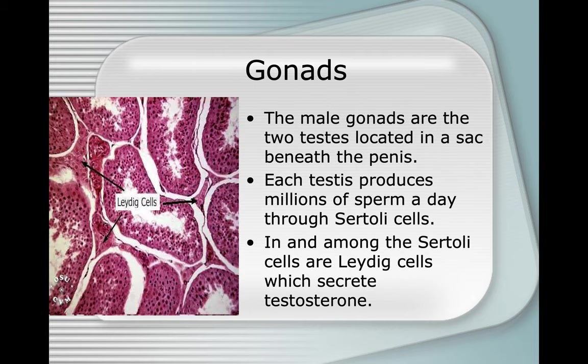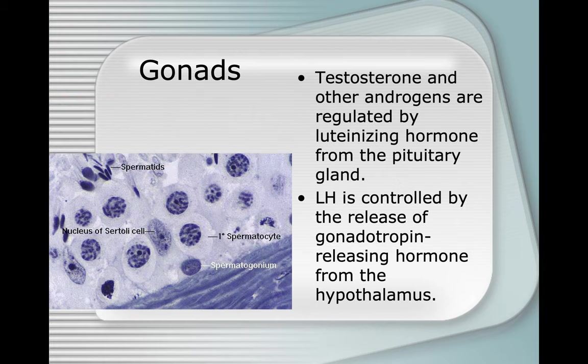The male gonads are the two testes located in a sac beneath the penis. Each testis produces millions of sperm a day through Sertoli cells. In and among the Sertoli cells are Leydig cells, which secrete testosterone. Testosterone and other androgens are regulated by luteinizing hormone from the pituitary gland, which is controlled by gonadotropin-releasing hormone from the hypothalamus.